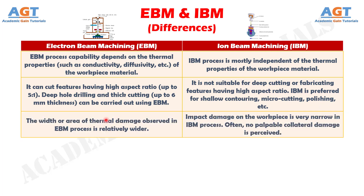Number 11. The width or area of thermal damage observed in Electron Beam Machining process is relatively wider, whereas impact damage on the workpiece is very narrow in Iron Beam Machining process. Often, no palpable collateral damage is perceived.